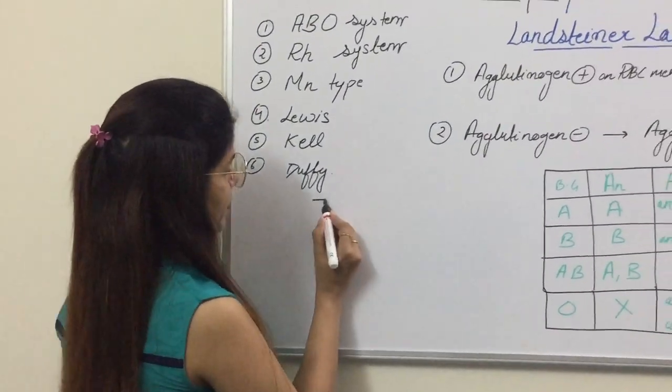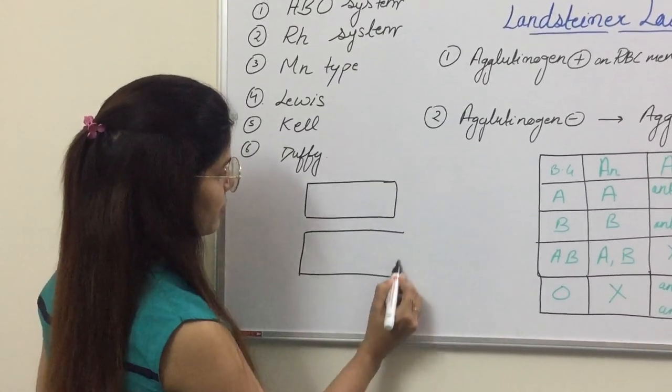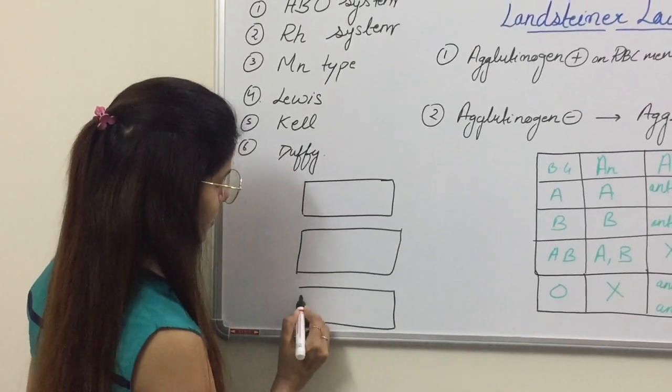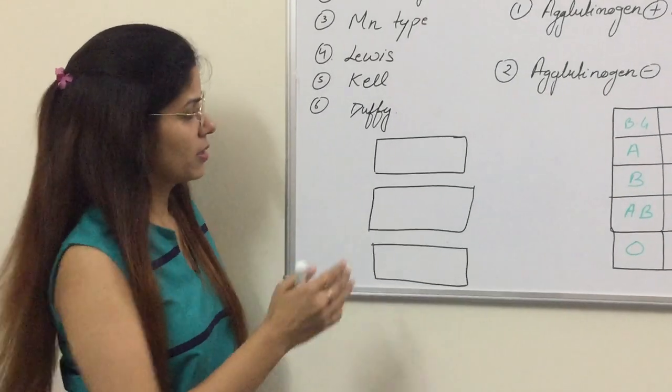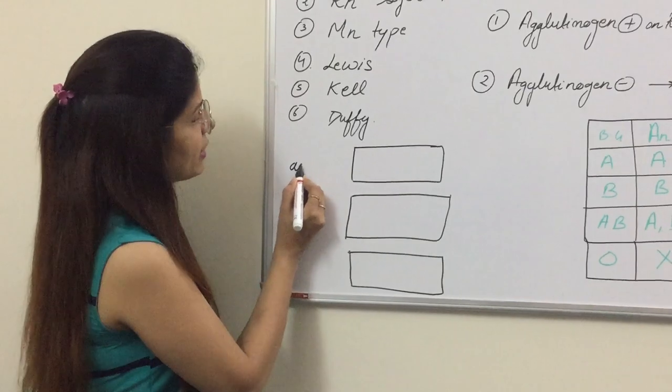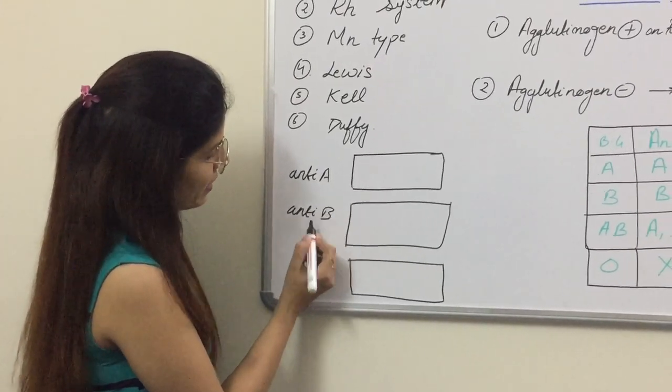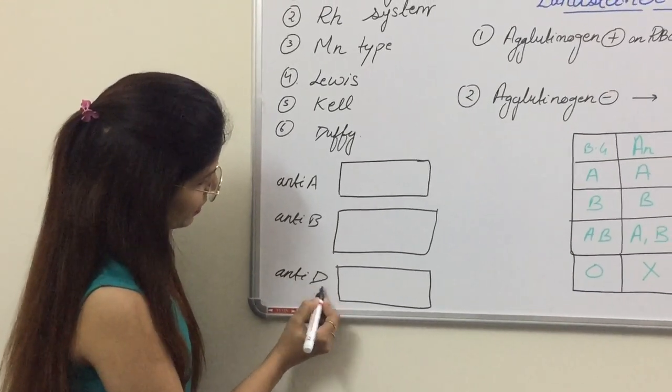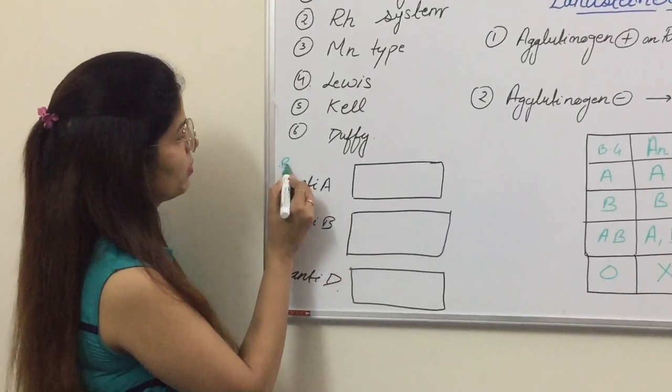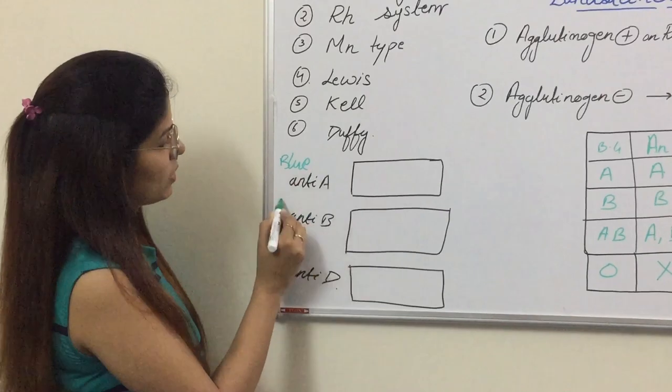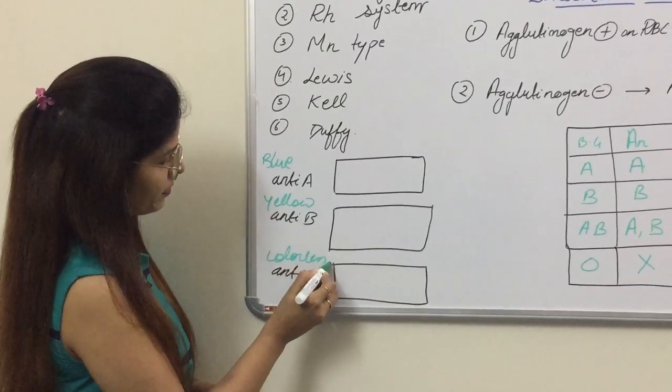This is one glass slide. This is the other glass slide. And this one is the third glass slide. We need four. The fourth glass slide we will use to mix these all solutions. Just label it anti-A, anti-B and anti-D. I'd like to mention the color of these antibodies. This anti-A is blue in color, this one is yellow in color, and this is colorless.